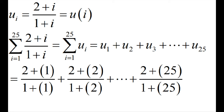So we evaluate it in the same way as we did before. You find u sub 1 by plugging in 1 into u, then you find u sub 2 by plugging in 2 into u, and you add them all together. And if you're curious, the answer is 27.8544.